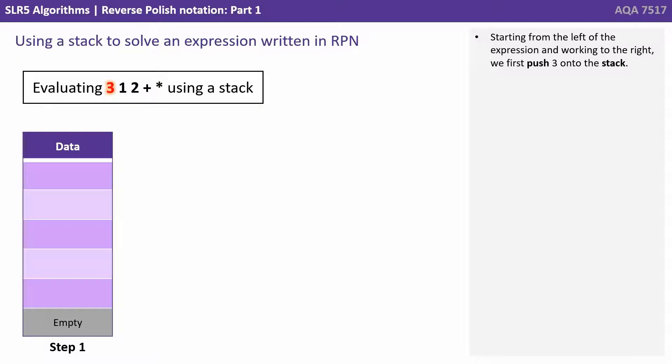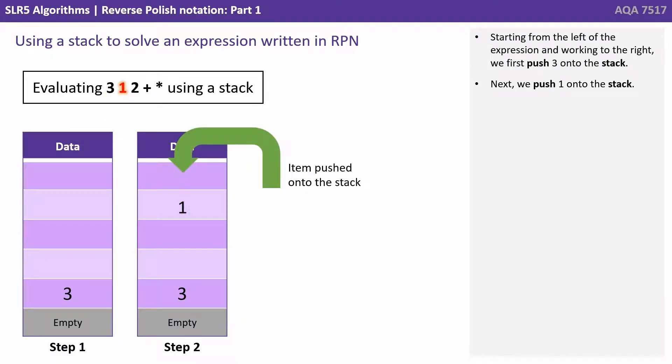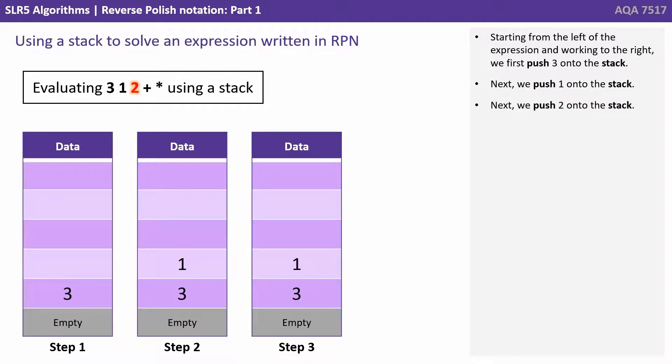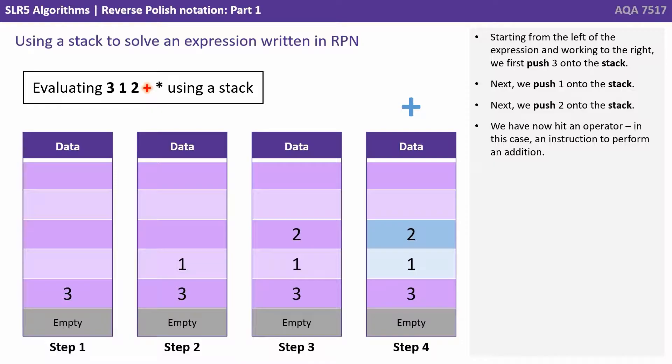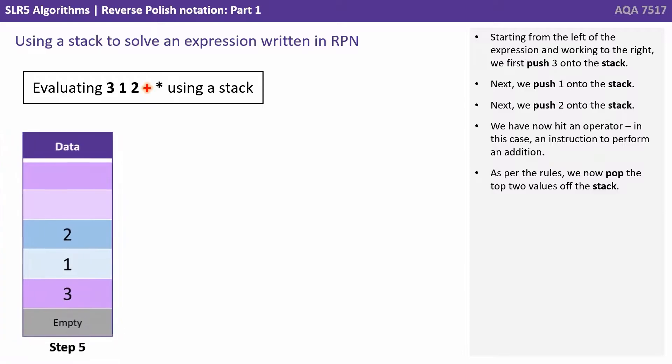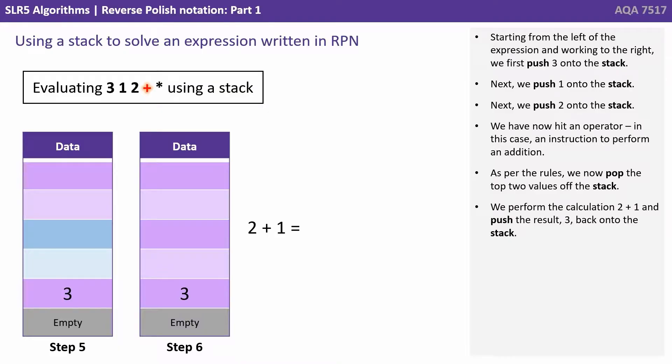So starting from the left of our reverse Polish notation expression and working to the right, we first push 3 onto the stack. Next we push 1 onto the stack and next we push 2 onto the stack. We now hit an operator, in this case an instruction to perform an addition. As per the rules we pop the top two values off the stack. We perform the calculation 2 plus 1 and push the result 3 back onto the stack.